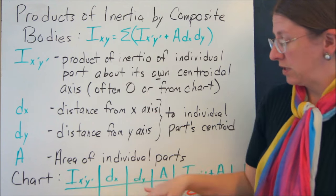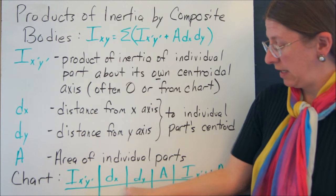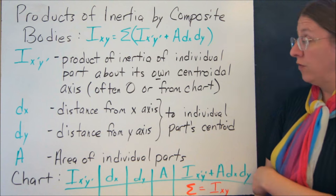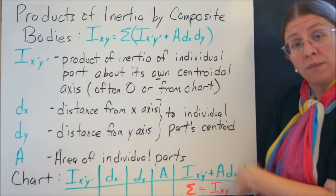dx and dy are the distance from the x and y axes to each individual part's centroid. A is the area, and then you put this in this chart, where you've got Ixy, dx, dy, A, and then the sum of them. All you've got to do is add up this last column.